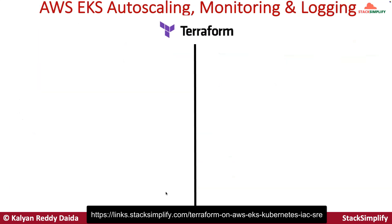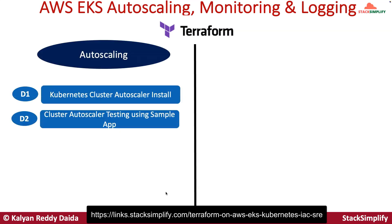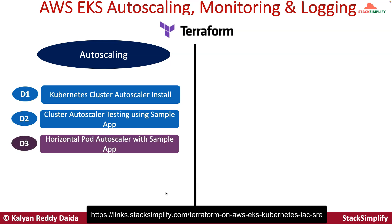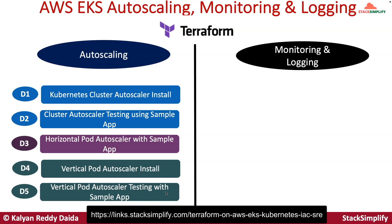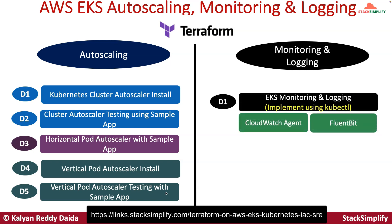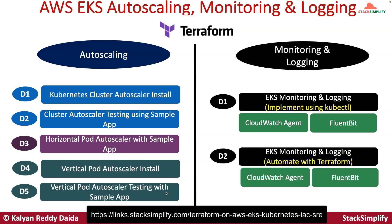From there we will move on to EKS autoscaling, monitoring, and logging. For autoscaling, we will install the cluster autoscaler controller on EKS and test it. For horizontal pod autoscaler, we will implement a sample app and test it. For vertical pod autoscaler, we will first install the related components and then test it with two demos. For monitoring and logging, we will first implement EKS monitoring and logging using CloudWatch agent and Fluentbit with kubectl, and then automate it with Terraform.